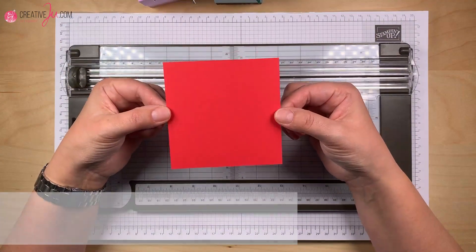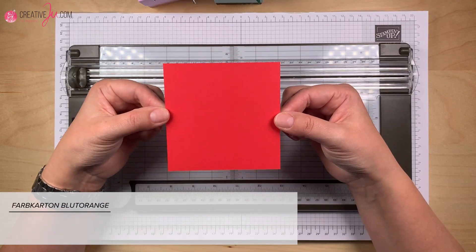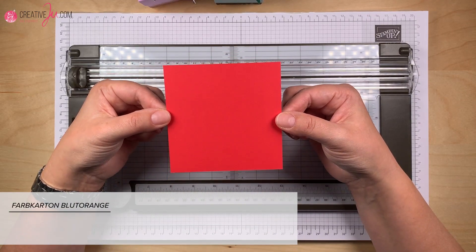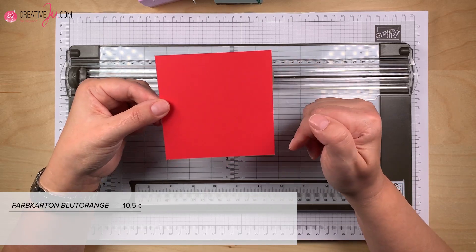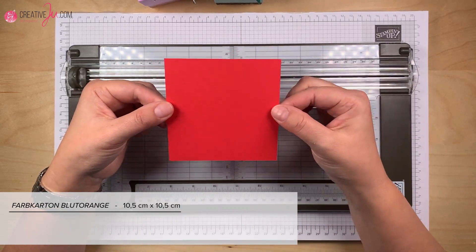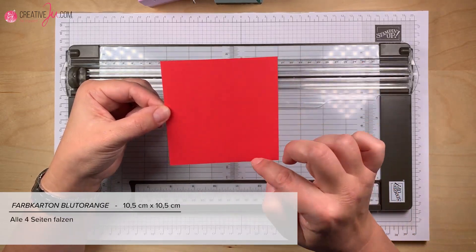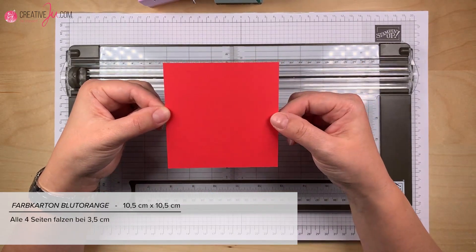Für den Boden brauchen wir ein Stück Farbkarton, hier Blutorange, passend zu den Kölner Farben natürlich, Rot-Weiß. Wir brauchen hier das Maß 10,5 x 10,5 cm. Und das Ganze falzen wir jetzt auf allen vier Seiten bei 3,5 cm.